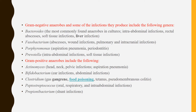Prevotella is found in intra-abdominal infection and soft tissue infection. Gram-positive anaerobes include Actinomyces found in head, neck, and pelvic infection and aspiration pneumonia; Bifidobacterium found in ear infection and abdominal infection; Clostridium found in gas gangrene, food poisoning, tetanus, and pseudomembranous colitis; Peptostreptococcus found in oral, respiratory, and intra-abdominal infection; and Propionibacterium found in shunt infection.